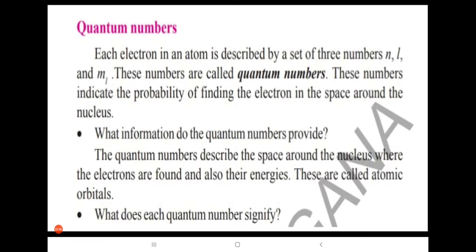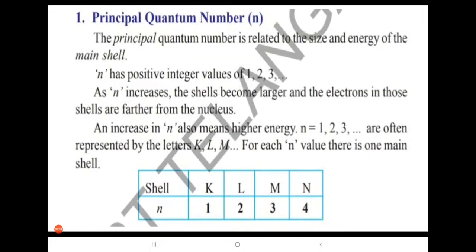What does each quantum number signify? These quantum numbers signify the probability of finding an electron in the space around the nucleus. The first quantum number is the principal quantum number, denoted by small n.